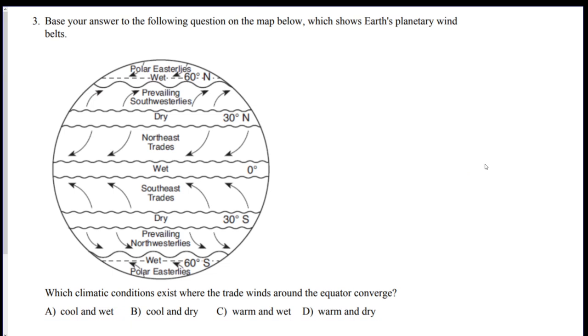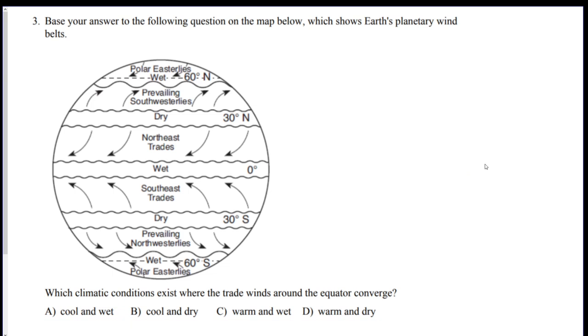Number three, we got our global wind patterns. Which climatic condition exists where the trade winds around the equator converge? Well, here's where they converge. Remember, these two arrows are going to meet up with these two arrows. So what's going to happen there? Well, it says wet, so we can get any dries out. Now, then you got to think, the equator. Is it warm or cold? It is warm. C. Best answer.